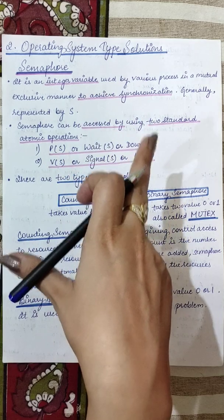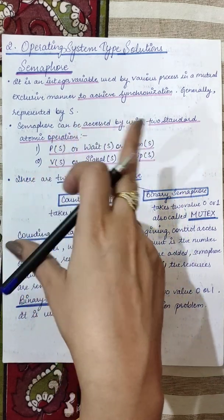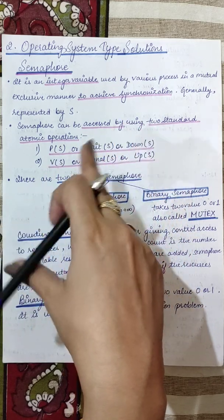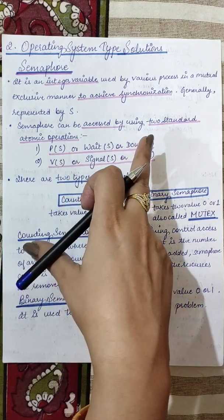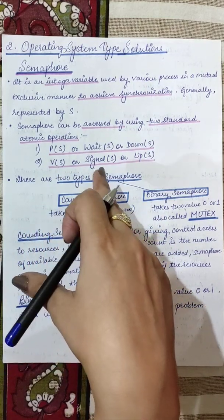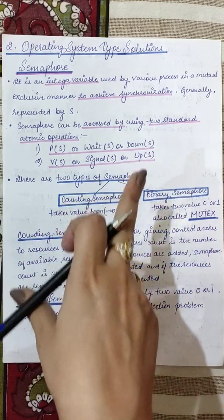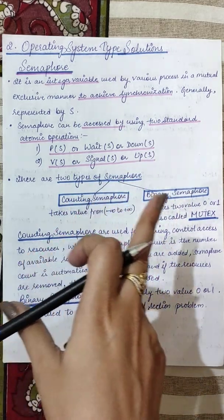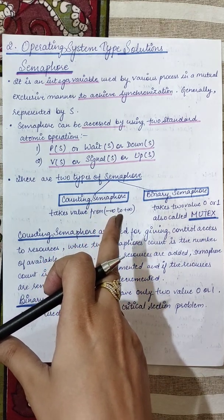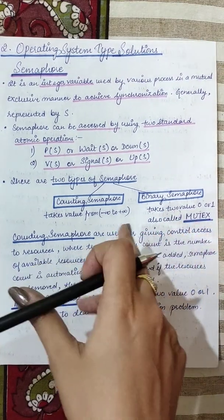Semaphore is a very important topic. It is an integer variable and the operating system helps in this solution approach — it will provide you system calls, क्योंकि ये Kernel mode में work करेगा. P, Wait, या Down S से semaphore variable S को decrement किया जाता है, और V, Signal, या Up S से increment होता है. Two types of semaphores होते हैं: counting semaphore and binary semaphore. Counting semaphore की value minus infinity से positive infinity तक जा सकती है, और binary semaphore की only two values होती हैं: 0 और 1.